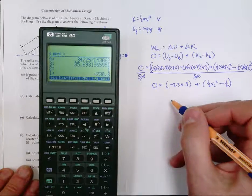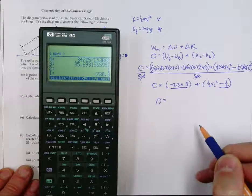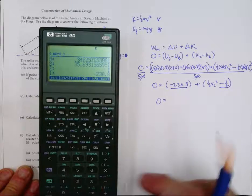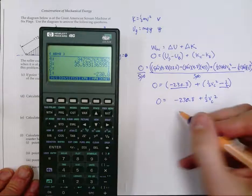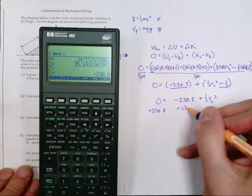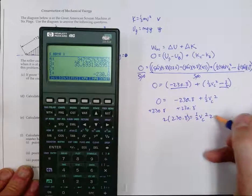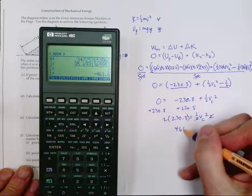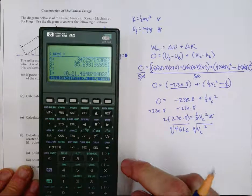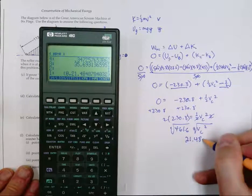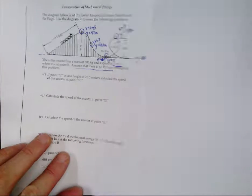Finishing the algebra: 230.8 equals one-half vC². Multiply both sides by two: 461.6 equals vC². Take the square root: vC equals 21.48 meters per second. That is our answer for the speed at C.